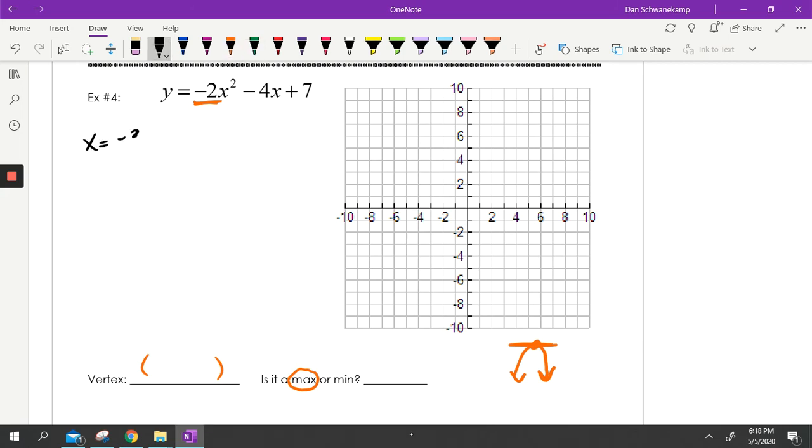We're graphing this thing. So the first thing I'm going to do is find the X value. Negative B over 2A. So it's going to be negative negative 4 or positive 4 divided by 2A. And my A is that negative 2. Negative 2. Put that together. That's 4 divided by negative 4. 4 divided by negative 4. Oh, that is negative 1. So my X value is negative 1. Then I'm going to find my Y value. To find my Y value, plug it back in.